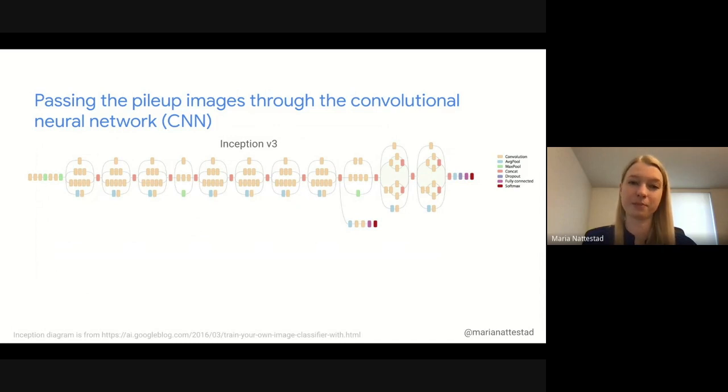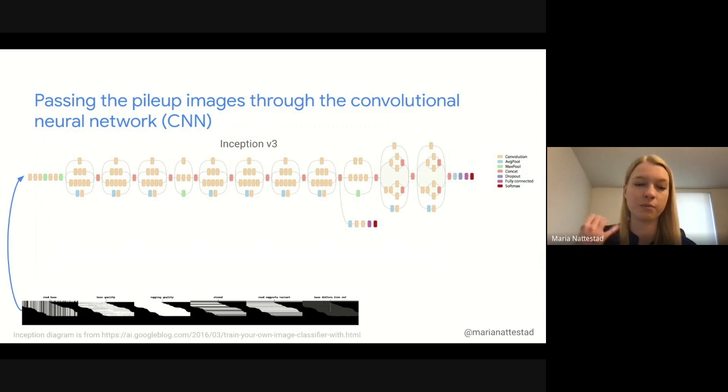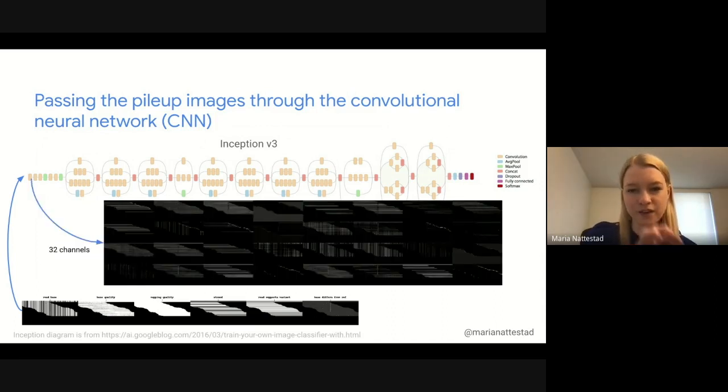Now that we have these pileup images, let's look at the convolutional neural network that DeepVariant uses to classify them into the zero, one, and two classes. This network is called Inception V3, very standard in the image classification space. We take our pileup image, this three-dimensional tensor, and plug it into the beginning of this network. If we inspect the values after one convolutional layer, we get 32 channels now. They're pulling out different features like vertical and horizontal stripes, outlines, the presence or absence of reads.